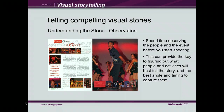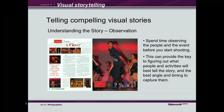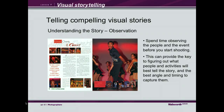The next step is observation. When a photojournalist goes to an event, they don't just start firing off photos left and right — they spend time observing the people and the event before shooting. They visualize and see the photo with their own eyes before raising the camera. By observing the action around you, you can figure out what people and activities will best tell the story, and also choose the best angle and timing to capture strong visual stories.